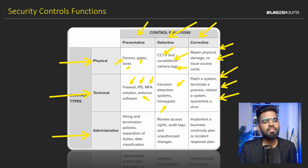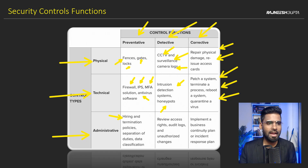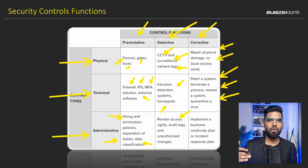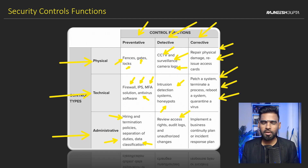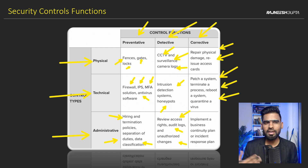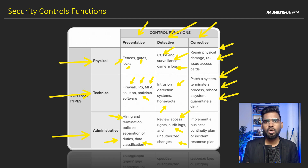In the administrative system, the preventive controls include hiring and termination policies. You make sure you do proper background checks, separation of duties, and data classification. For detective control, you review access rights, look at audit logs — who is logging into what — and check if somebody is doing privilege escalation, like a normal user trying to access admin privileges. There should be a log generated for that. Organizations also make use of file integrity software so that for every privileged access or privileged account, a very detailed log is generated.